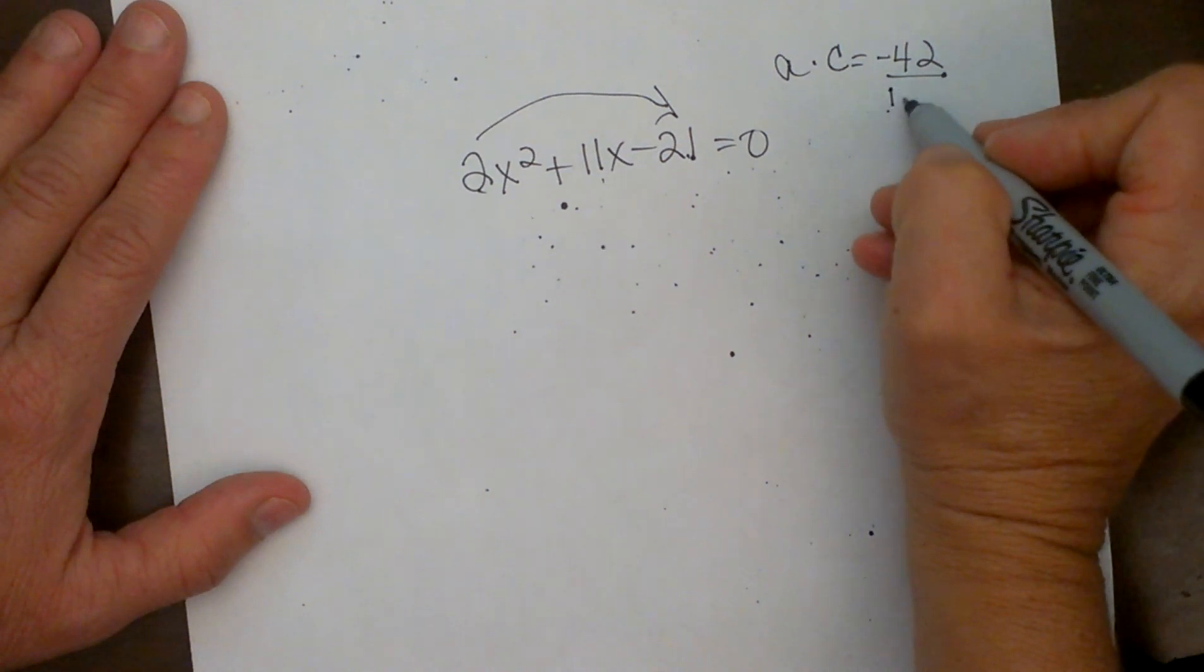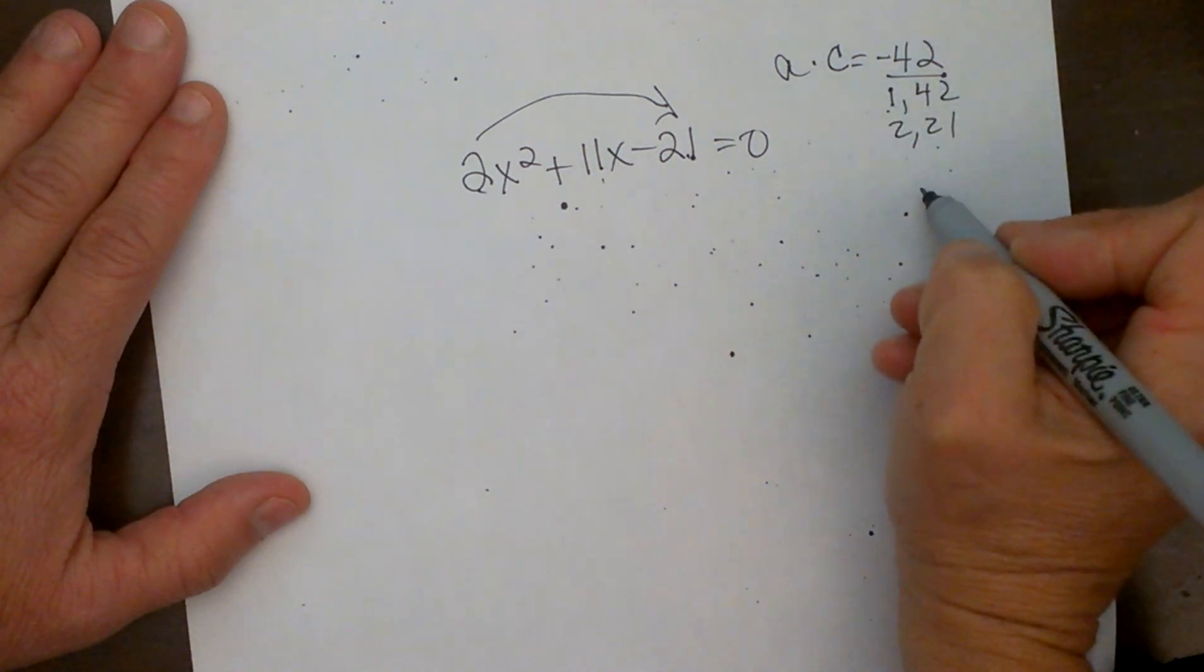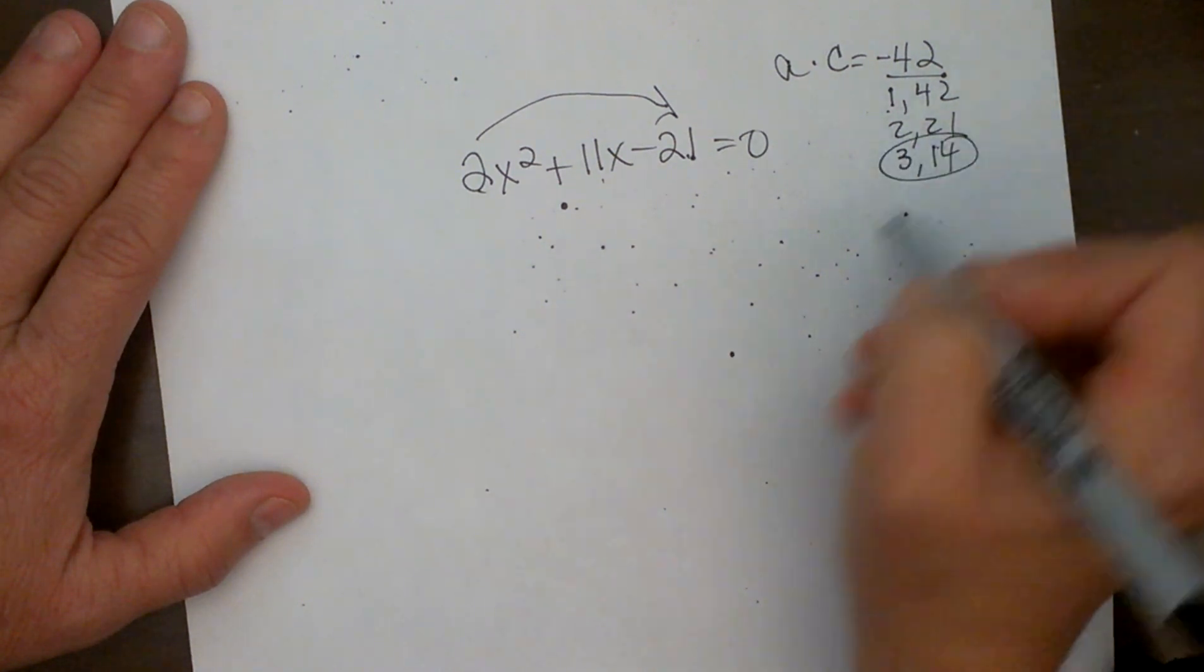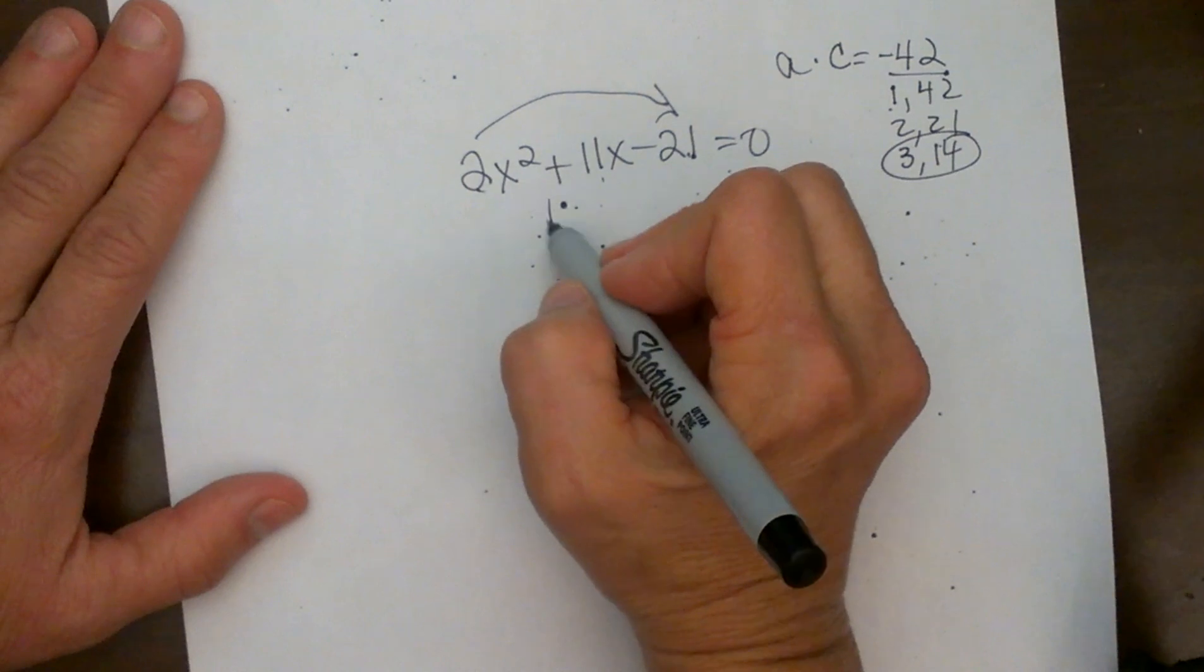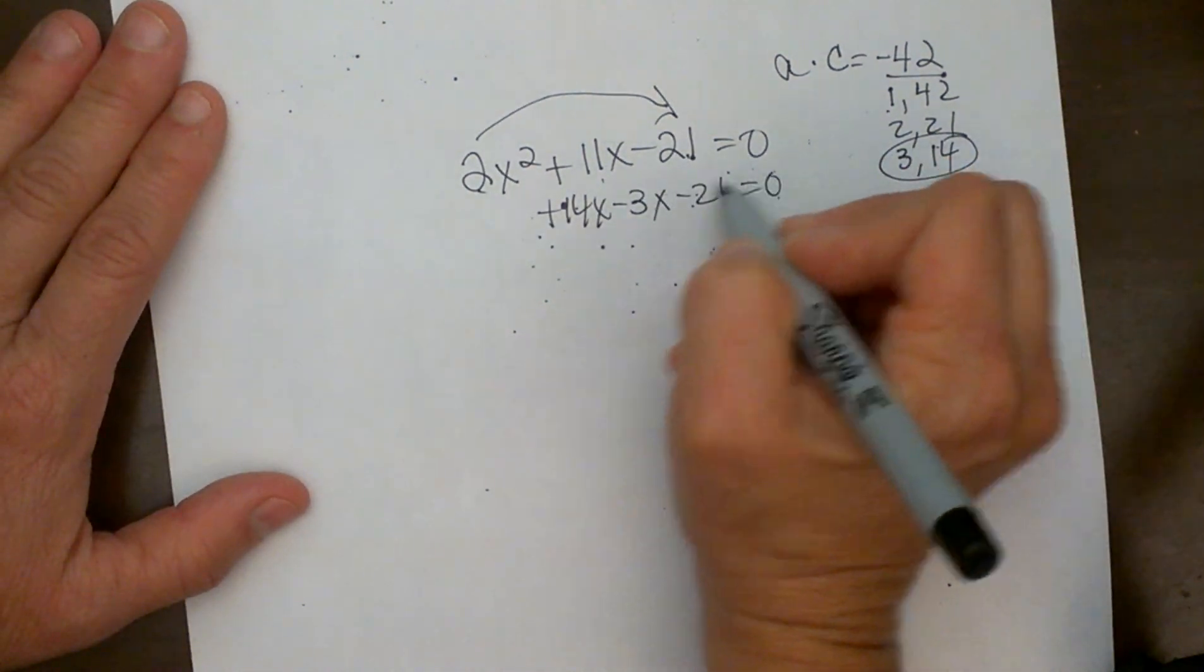I have one and forty two, nope, two and twenty one, nope, three and fourteen, ah, bingo there. There it is. So it is a positive fourteen x and a minus three x minus twenty one equals zero.